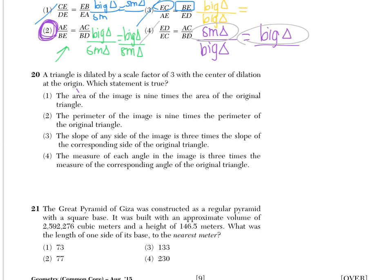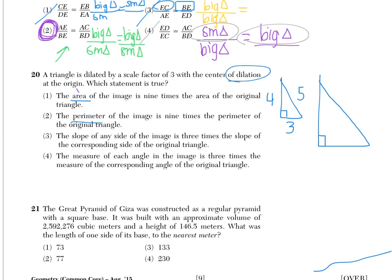Number 20 says a triangle is dilated by a scale factor of 3 with the center of dilation at the origin. Which statement is true? The first two choices talk about area and perimeter, so I love sketching a picture. Starting with a 3-4-5 right triangle — a Pythagorean triple — then growing it by scale factor 3, which means multiplying each side by 3. A right angle stays a right angle because dilation produces similar triangles with congruent angles. So the new triangle is 9-12-15.